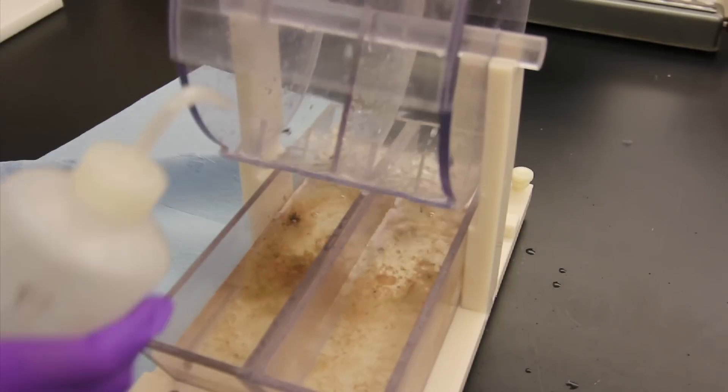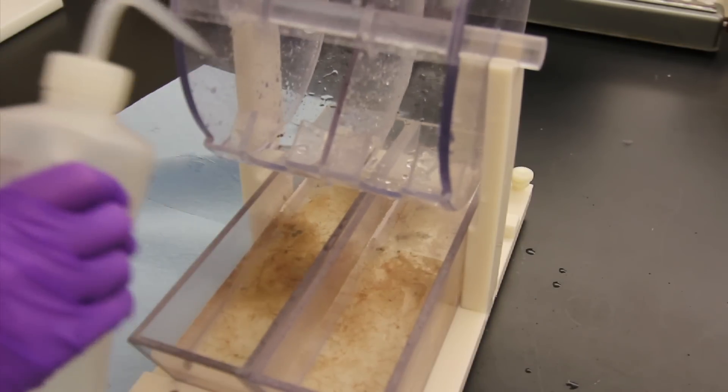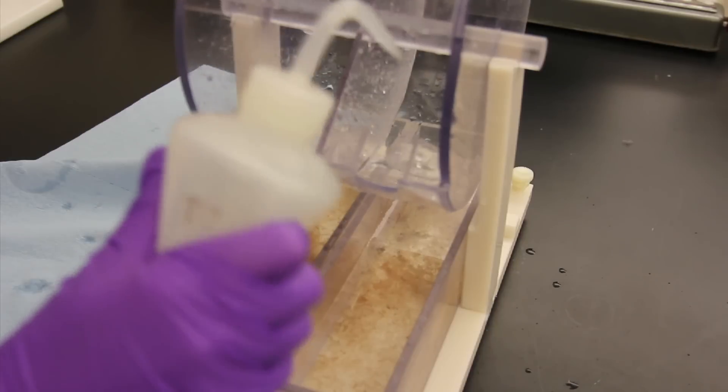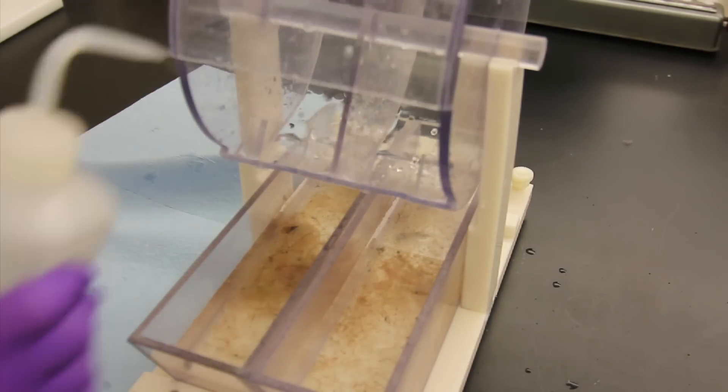Just how dilute your sample needs to be depends on the type of analysis. As a rule of thumb, your split should contain about 1000 to 1200 total animals.